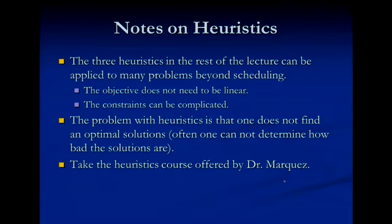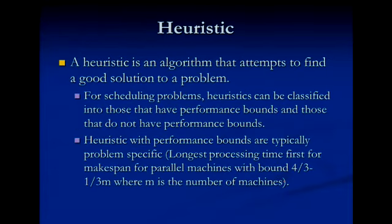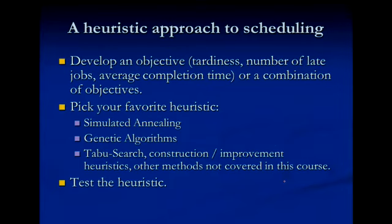For the rest of this lecture, I'm going to discuss three heuristics that can be applied to scheduling. A heuristic is an algorithm that attempts to find a good solution to the problem. For scheduling problems, you can have heuristics with performance bounds, but most metaheuristics don't. A classic heuristic: if you schedule a parallel machine taking the longest job first, you're guaranteed to be within 4/3 minus 1/3 divided by m of the optimal schedule. The first step is to find an objective — such as tardiness or number of late jobs — then pick your favorite algorithm: simulated annealing, genetic algorithms, taboo search — and test the heuristic.